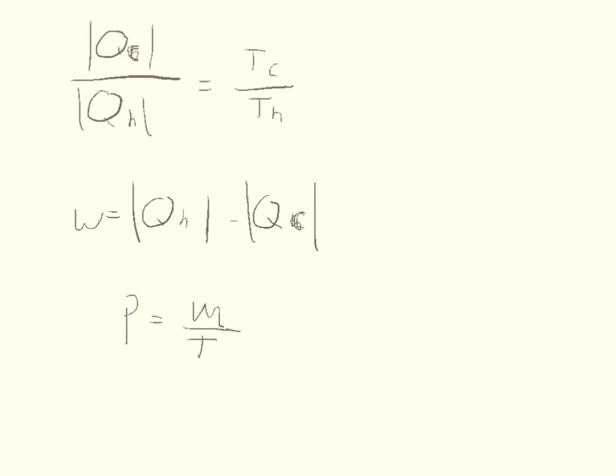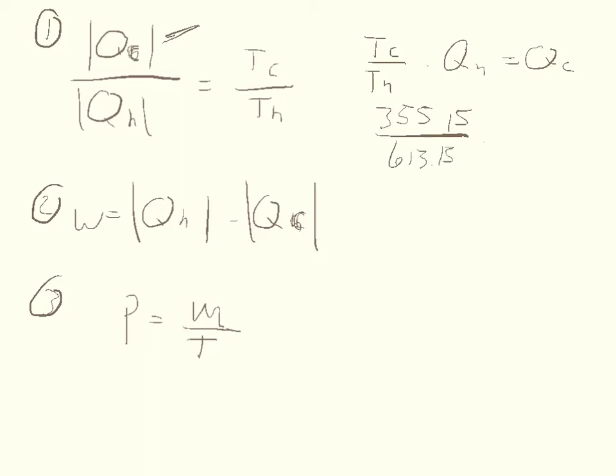I've rearranged these so we have them in order of steps. We're solving for QC. All we got to do is take TC over TH, multiply it by QH, and that equals QC. The temperature of the cold cycle was 355.15, divide that by 613.15, and multiply it by 21,600. That equals 12,511.2 joules, so QC equals 12,511.2.